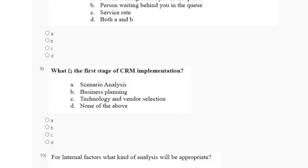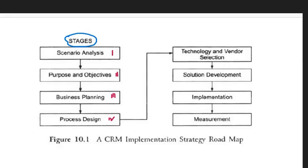Question number nine: what is the first stage of CRM implementation? First: scenario analysis. Second: business planning. Third: technology and vendor selection. Fourth: none of the above. The stages of CRM implementation are: first scenario analysis, second purpose and objective, third business planning, fourth process design, fifth technology and vendor selection, sixth solution development, seventh implementation, and last is measurement. So the correct answer is option A — scenario analysis.